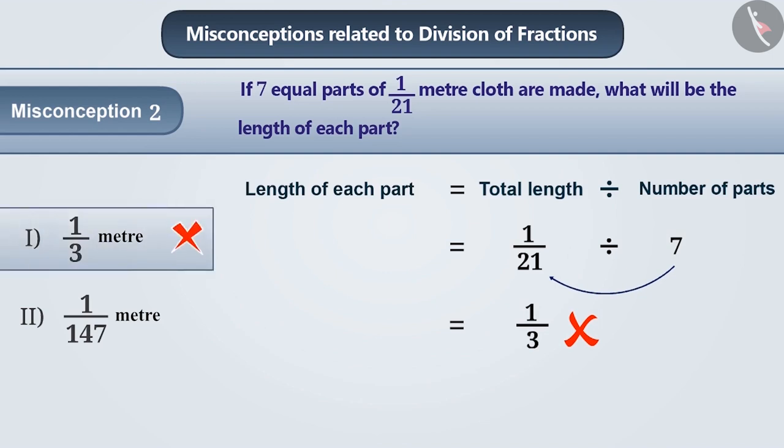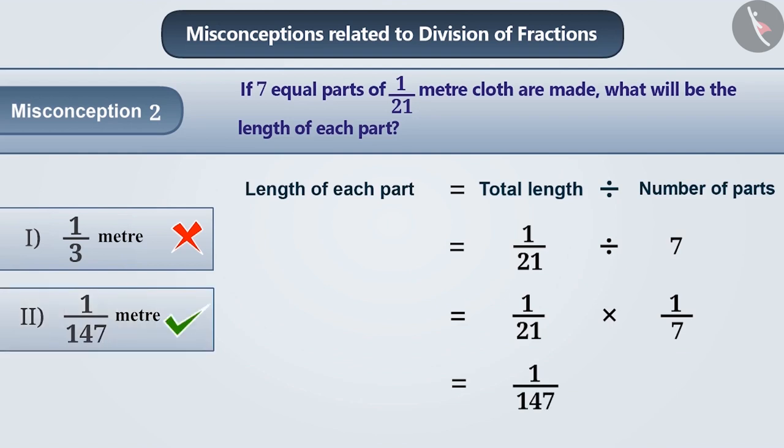Hence, option 1 is incorrect. The correct understanding is that we keep the first number exactly the same and multiply it by the reciprocal of the second number. That is, 1 by 21 divided by 7 is equal to 1 by 21 into 1 by 7, which is equal to 1 by 147. Therefore, the correct answer is option 2.